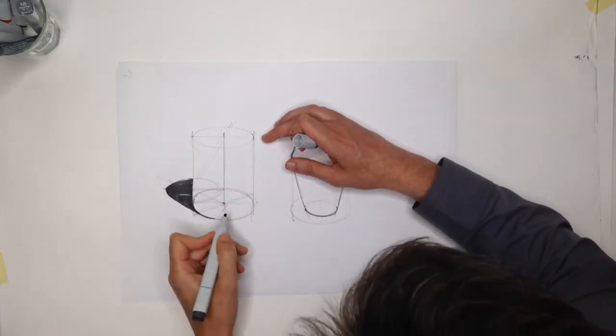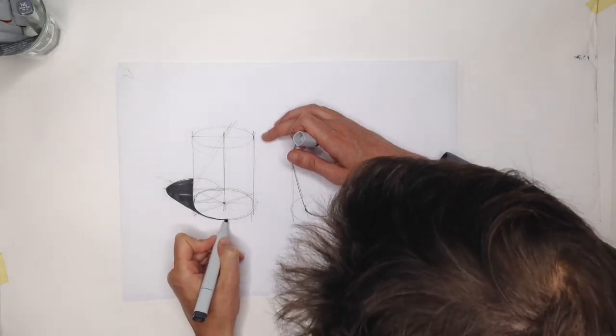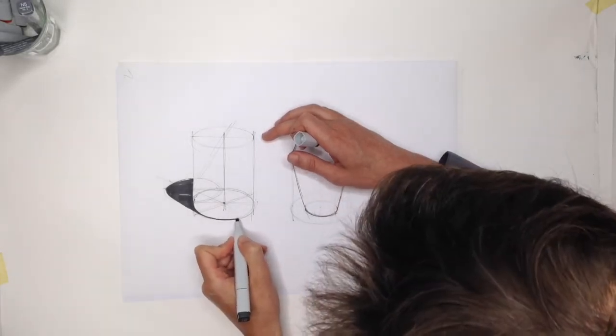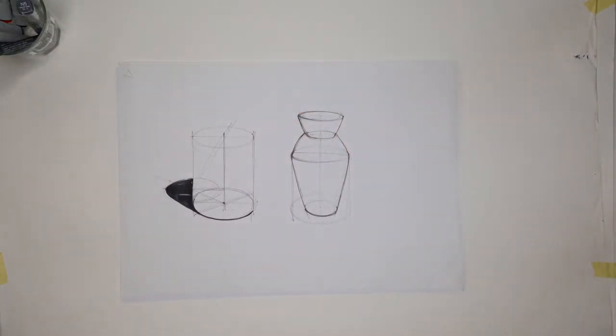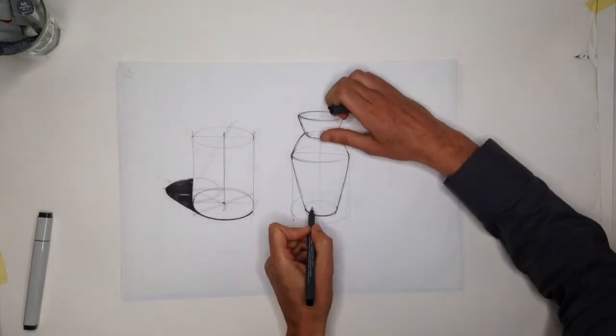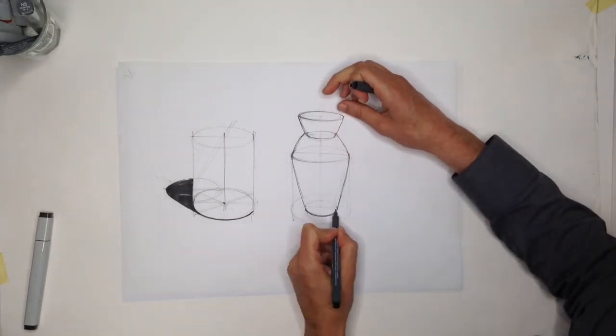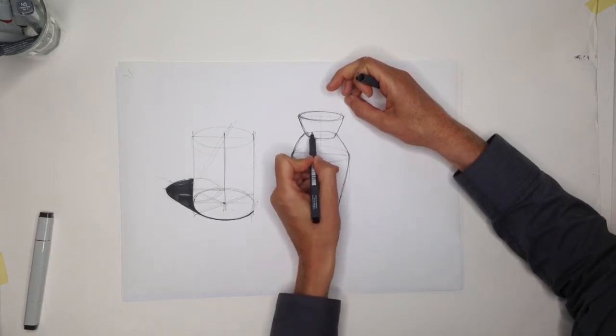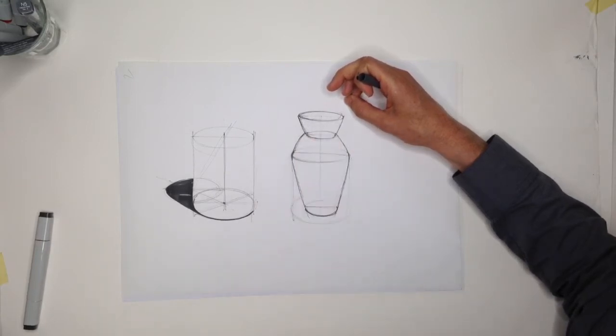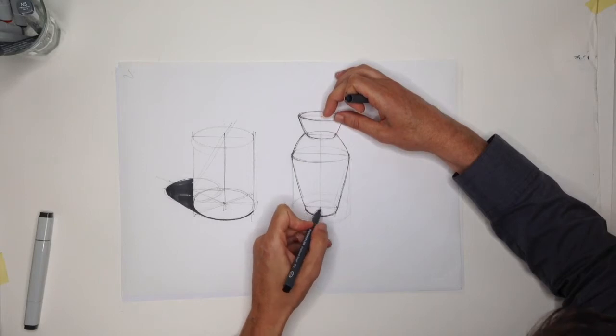At the back, always darken that edge because there's a small radius at the front. And there you have it, pretty simple really. The next, just to practice, how would you do it in this? You need to see this as just a series of ellipses floating in space.